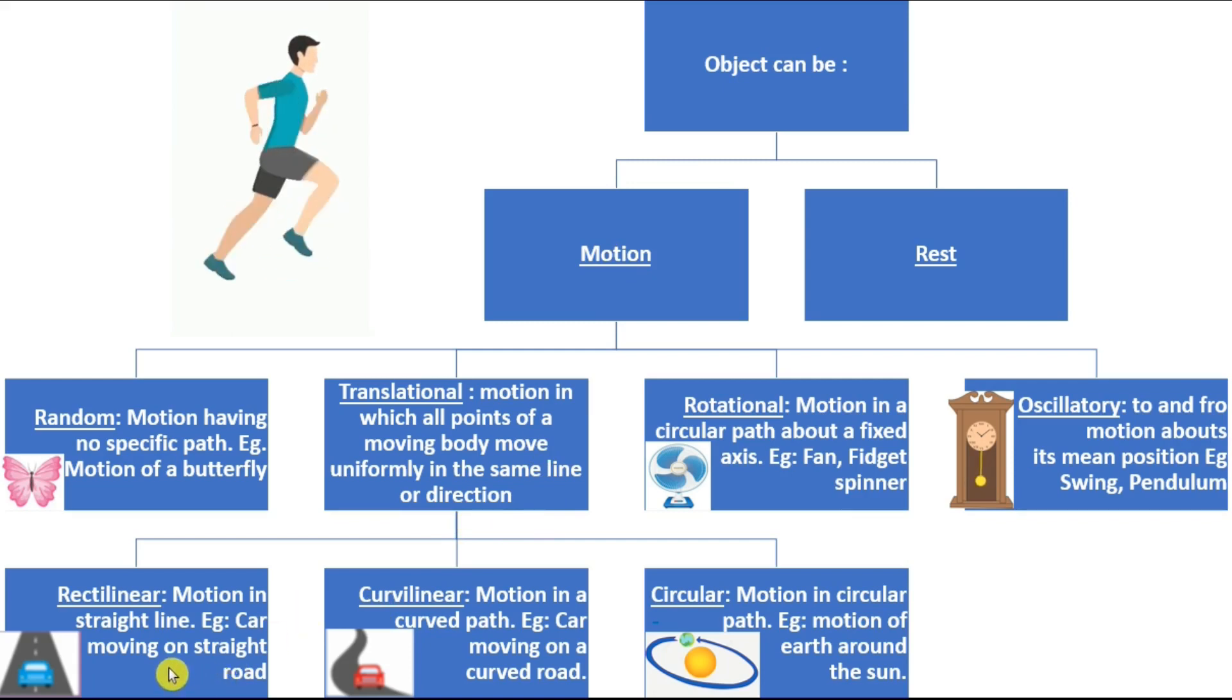The three types of translational motion are rectilinear motion. Motion in a straight line. This is the translational motion along a straight line. Example is car moving on a straight road.